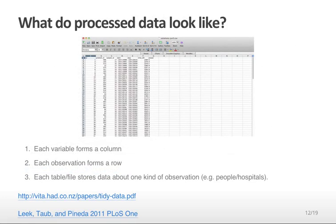So what do processed data look like? They look something like this. This is an example from a paper that we published in 2011 on peer review. Each variable appears in one column, and each row corresponds to one observation. So for example, this column only contains the variable on which time the review was completed. Meanwhile, this row contains all the information about that particular review.